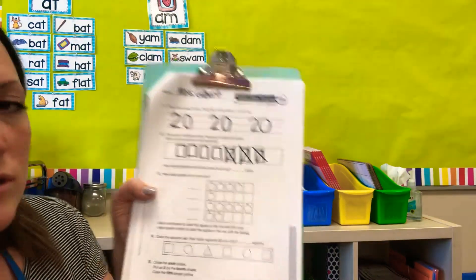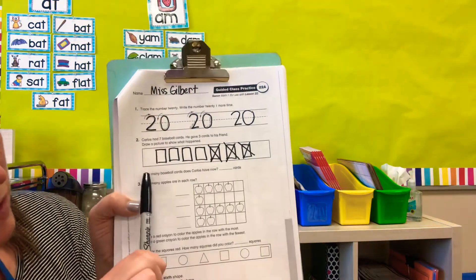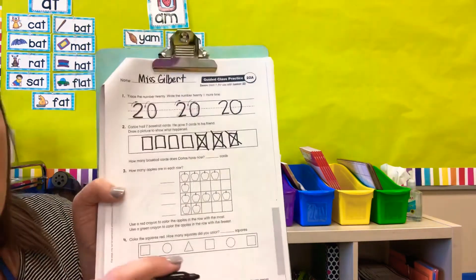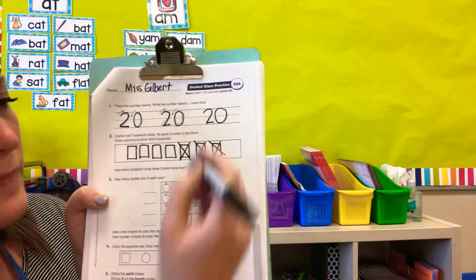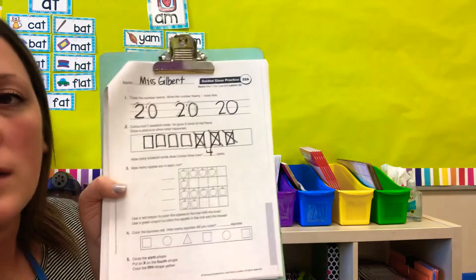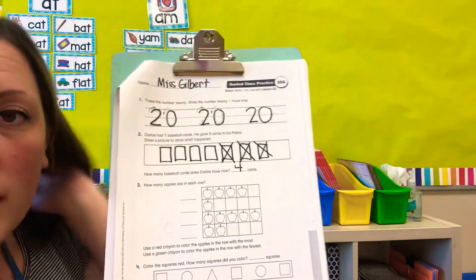Draw a picture to show what happened. Okay, that's what we did. How many baseball cards does Carlos have now? How many are left? One, two, three, four. So seven take away or minus three equals four.